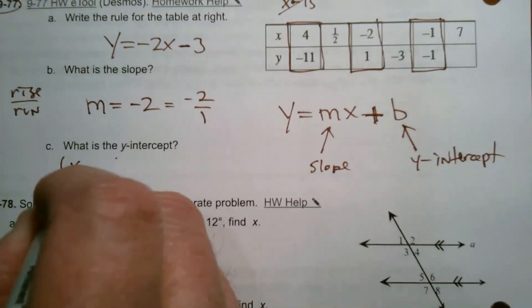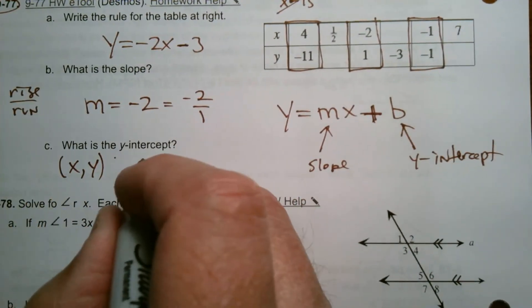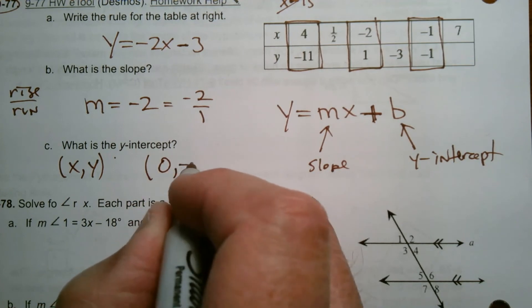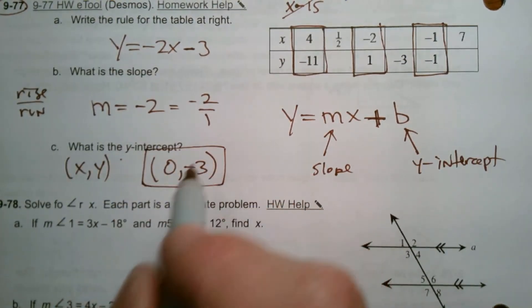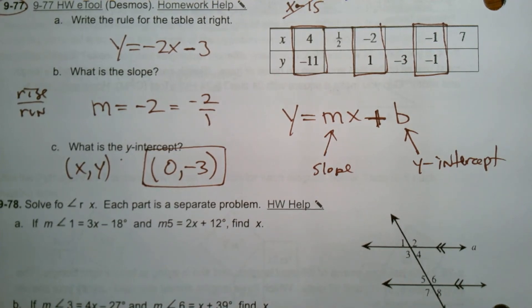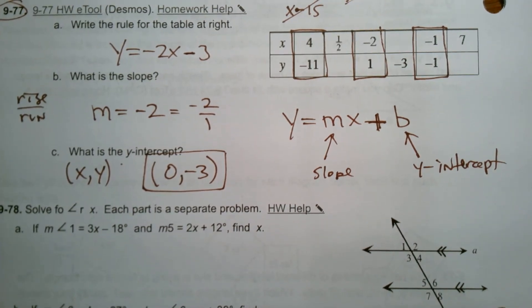And remember, every point is written x, y. And so the y-intercept, the x is 0. In this case, the y is negative 3. So my y-intercept is 0, negative 3. All right. There we go.